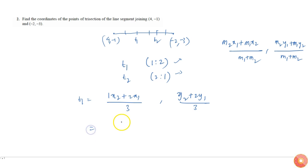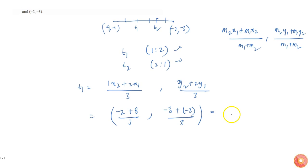So this becomes x2 which is -2 plus 2 times x1 which is 8, all by 3. And y2 is -3 plus 2 times y1 which is -2, by 3. Therefore this point will become 6/3 which is 2, and -3 minus 4 is -7, so 2 comma -5/3.